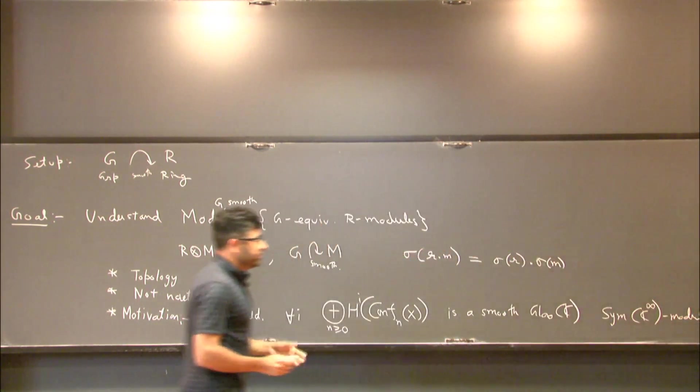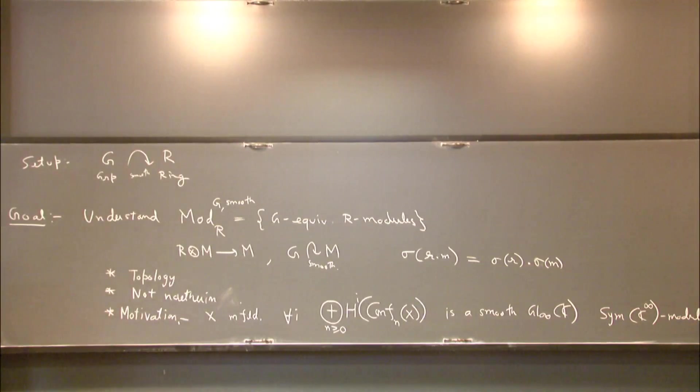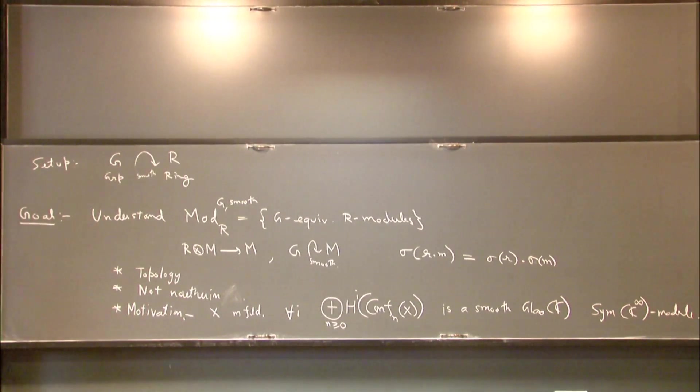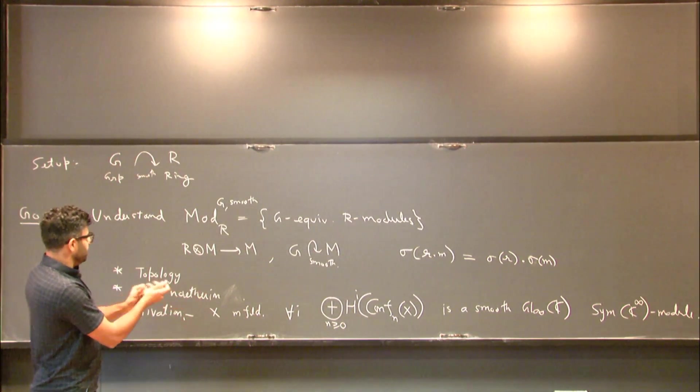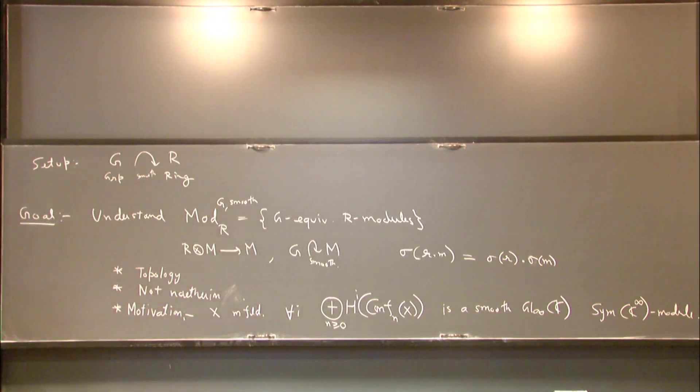This thing is a smooth GL-infinity SIM-C-infinity module. So we are in a situation where the group is weird, infinite, and the ring is also non-noetherian. So there is an interest in such rings and that's why I'm trying to study these.